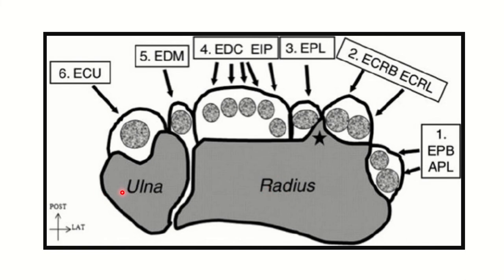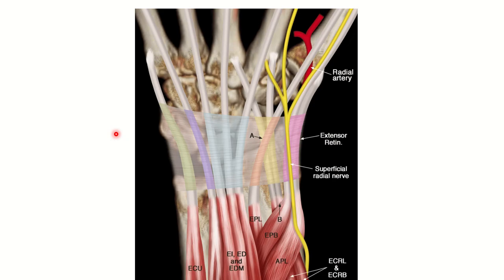It is clear that in the extensor retinaculum there are six compartments, and in these six compartments different muscle groups pass through. Here we can see the radius and ulna — ulna lies in the medial part and radius lies in the lateral part. The compartments start from the lateral part and extend up to the medial part. The whitish structure visible here is the extensor retinaculum, and below it different groups of muscles pass through.